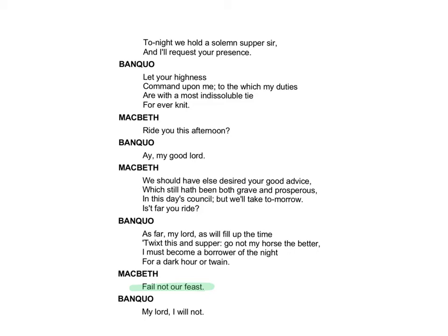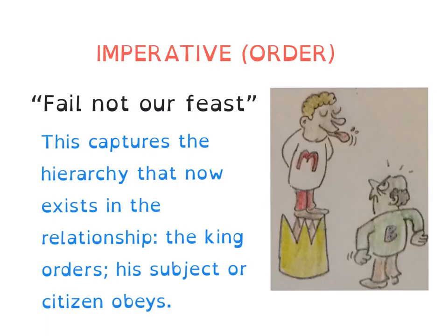First thing we're going to lock our literary laser vision onto is this line of Macbeth's towards the end of the extract: 'Fail not, our feast.' That's what he says to Banquo. So what has been revealed here about Banquo and Macbeth's relationship? Well, this use of imperative — this order — 'Fail not, our feast' — shows that Macbeth is now in a position of power over Banquo, because he can dish out demands, he can cough out commands, and his subject — his faithful servant Banquo — has to obey.